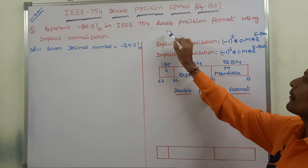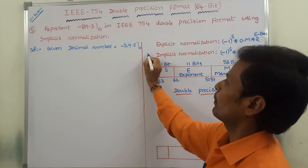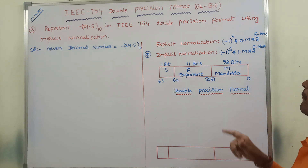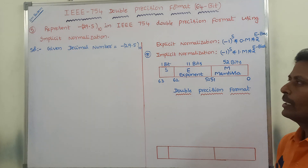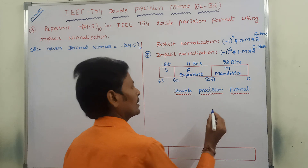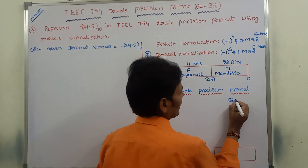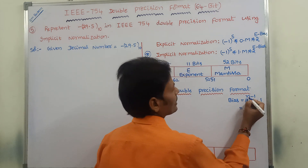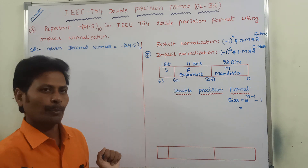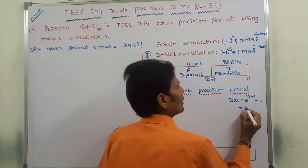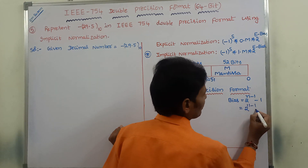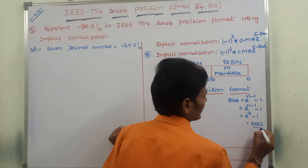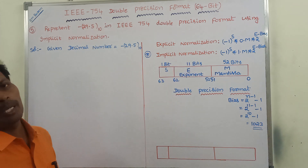Among the two types of normalization, the default one is implicit normalization — whether specified in the given problem or not, we have to use implicit normalization by default. To find the bias value, the formula is: bias = 2^(N−1) − 1, where N is the number of bits allocated for the exponent. Since 11 bits are allocated for the exponent, that is 2^(11−1) − 1 = 2^10 − 1 = 1023. This is the bias value in double precision format.